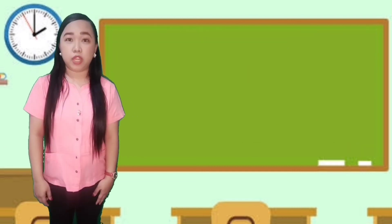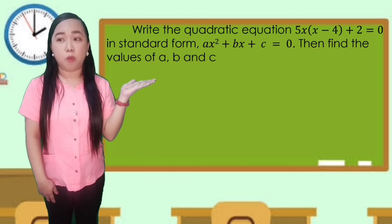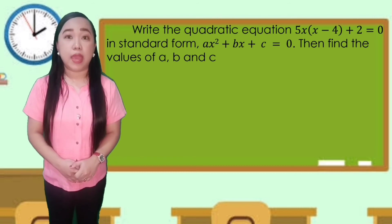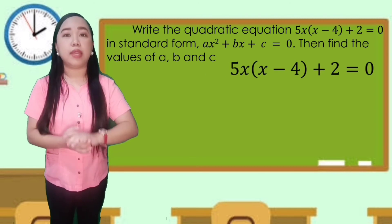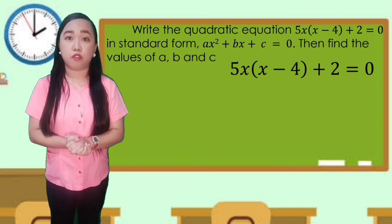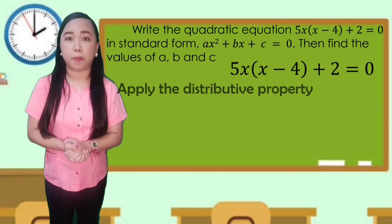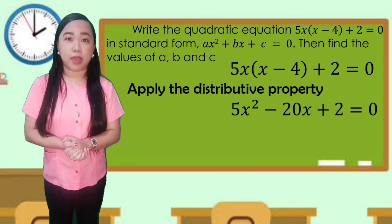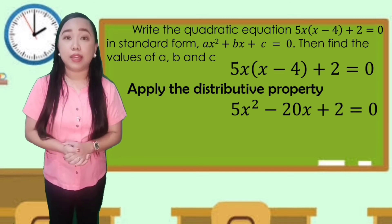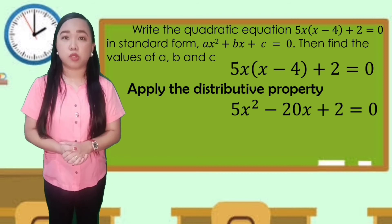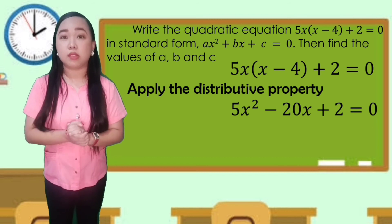For example 2, write 5x multiplied by the quantity of x minus 4 plus 2 equals 0 in standard form and find a, b, and c. We apply the distributive property: 5x times x is 5x squared, and 5x times negative 4 is negative 20x. The resulting equation is 5x squared minus 20x plus 2 equals 0, which is already in standard form.